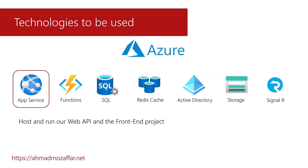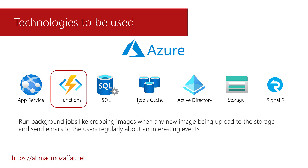Now let's talk about the cloud part — what services we are going to use from Azure. Basically, we will use the App Service, which will host and run our Web API and our front-end project on Azure. The second service we are going to use is the awesome one, which is Azure Functions.